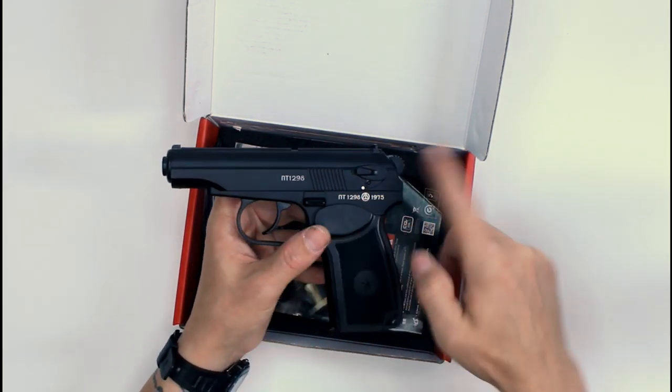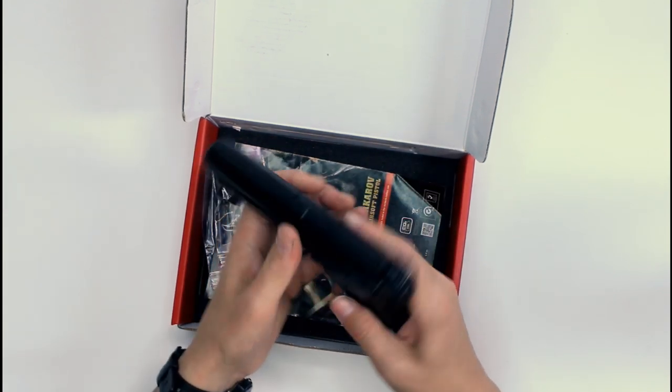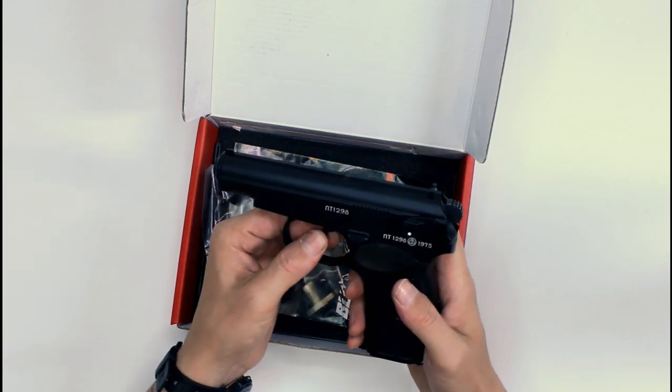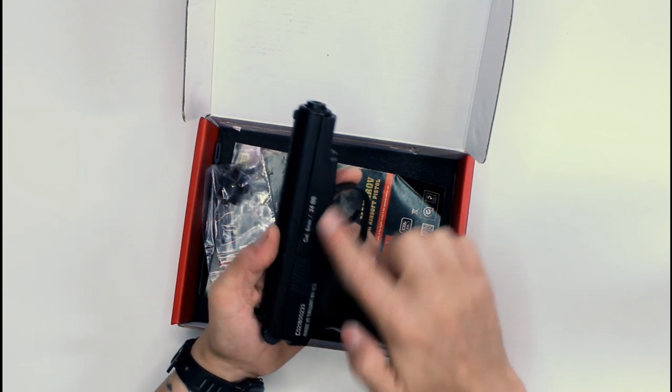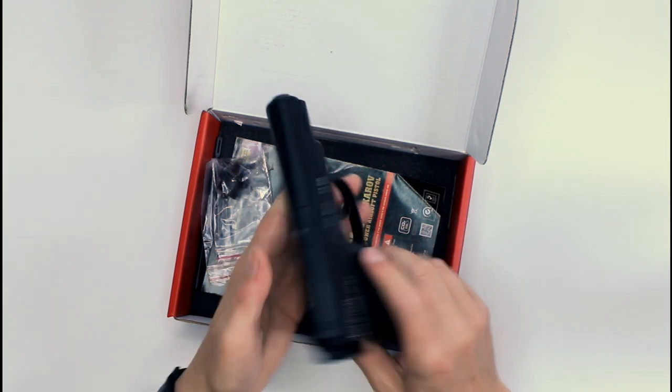Fire selector or safety is metal. Slide lock is non-functioning. Trigger is metal, hammer is metal. It's got markings on both sides. This is metal.